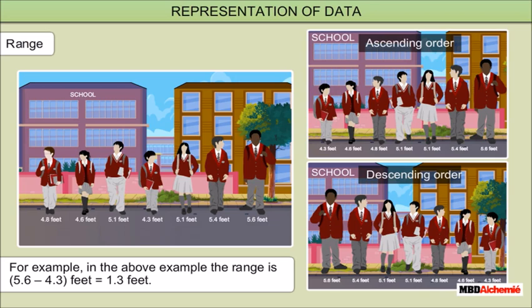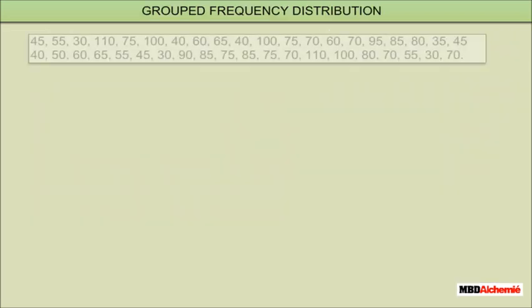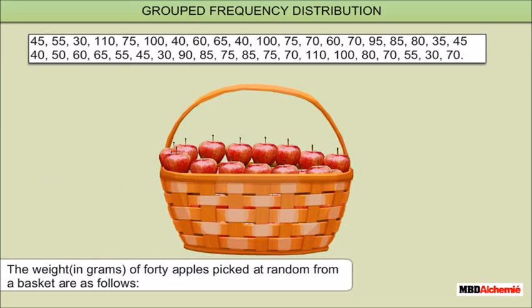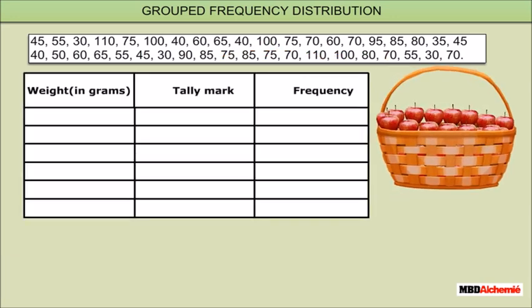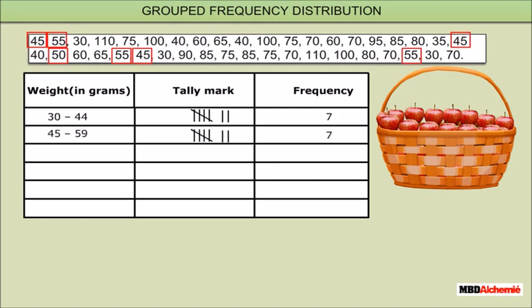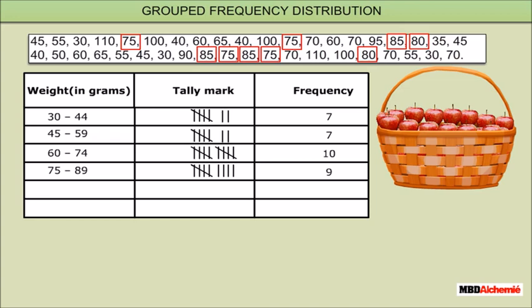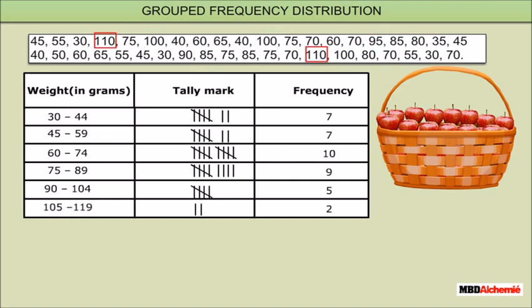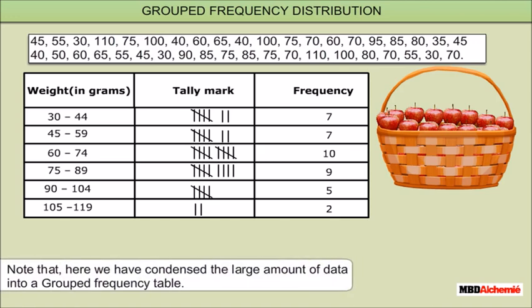Grouped frequency distribution: the weight in grams of 40 apples picked at random from a basket can be tabulated in groups. From 30 to 44 there are 7 elements, 45 to 59 there are 7 elements, 60 to 74 there are 10 elements, 75 to 89 there are 9 elements, 90 to 104 there are 5 elements, and 105 to 119 there are 2 elements. Here we have condensed the large amount of data into a grouped frequency distribution table.